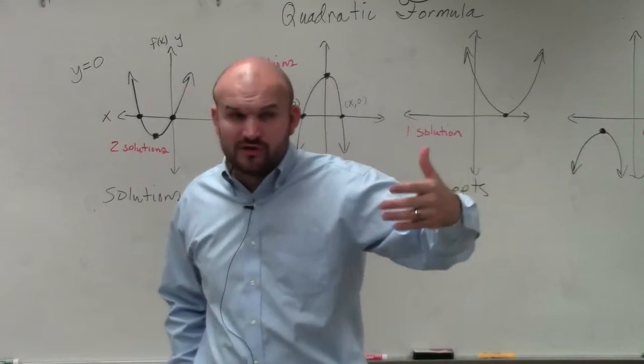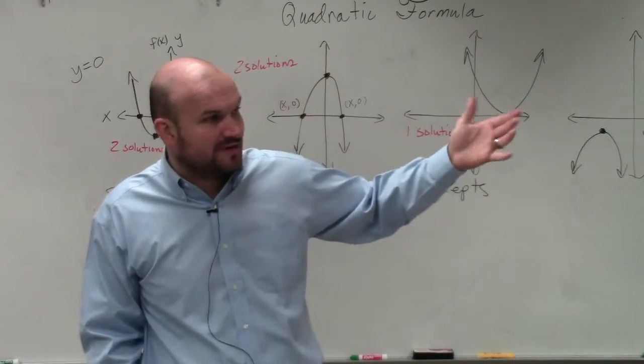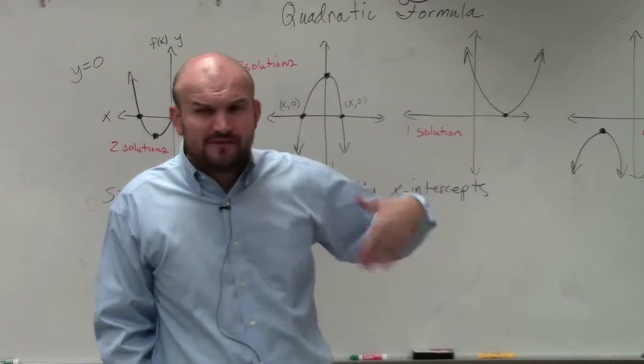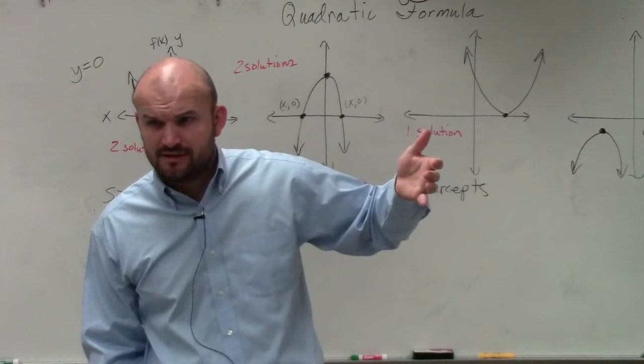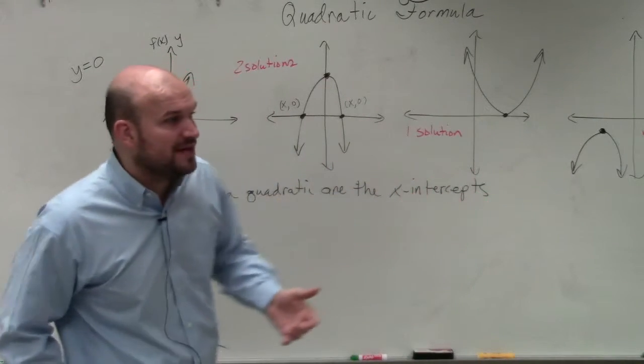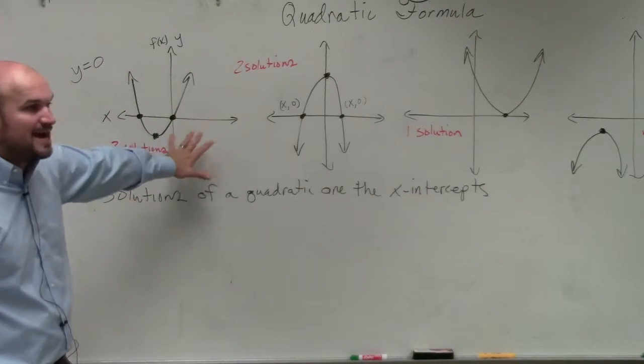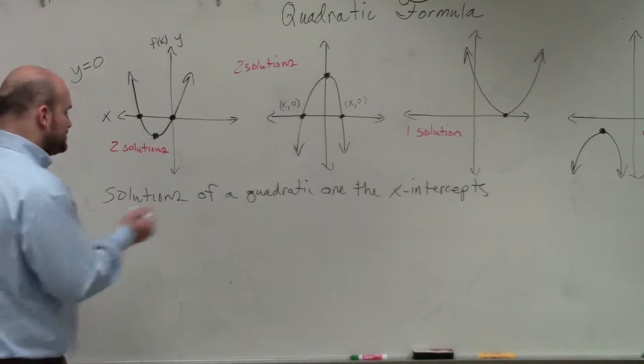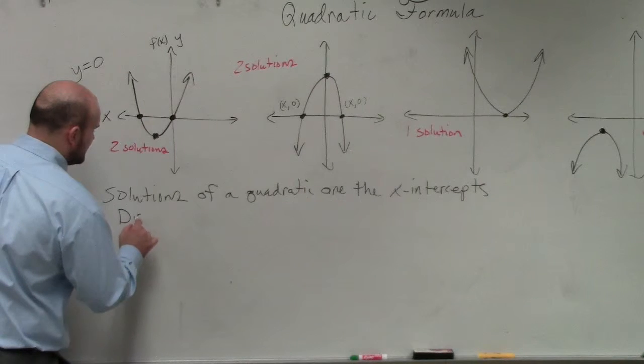But without graphing it, because even though you guys did unit 2 and you should be able to graph any quadratic I give you, graphing sometimes takes a little bit of work, right? So algebraically, we have a way to determine what the type of solutions are without actually having to graph it. And to do that, we have the discriminant.